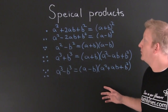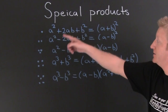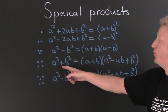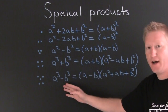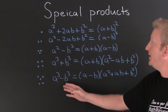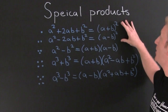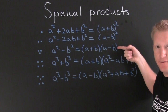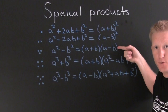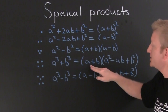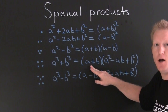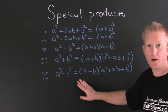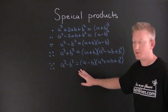Here we have the perfect squares, the difference of squares, the sum of cubes, and the difference of cubes. These are special products.